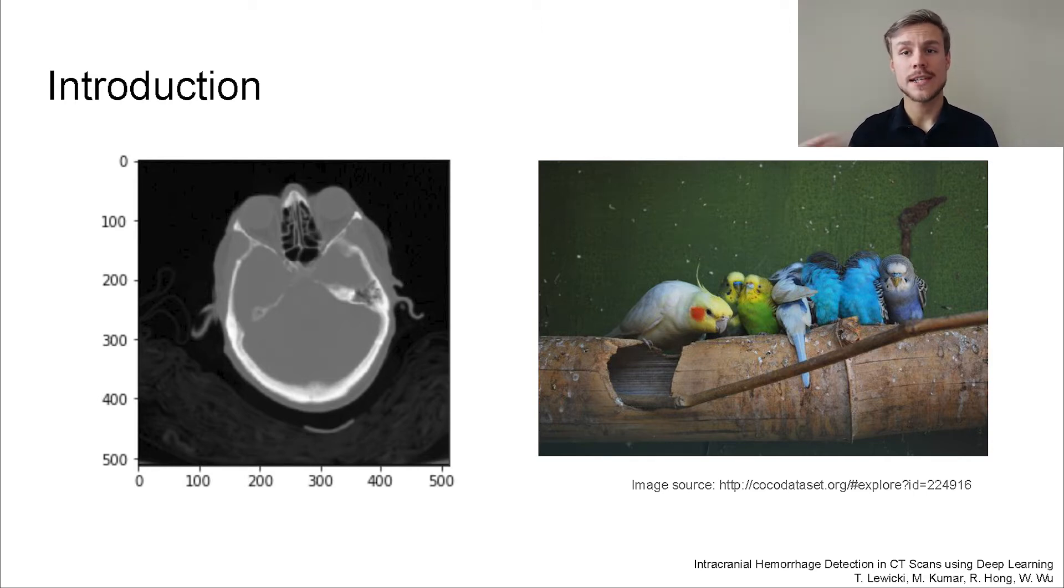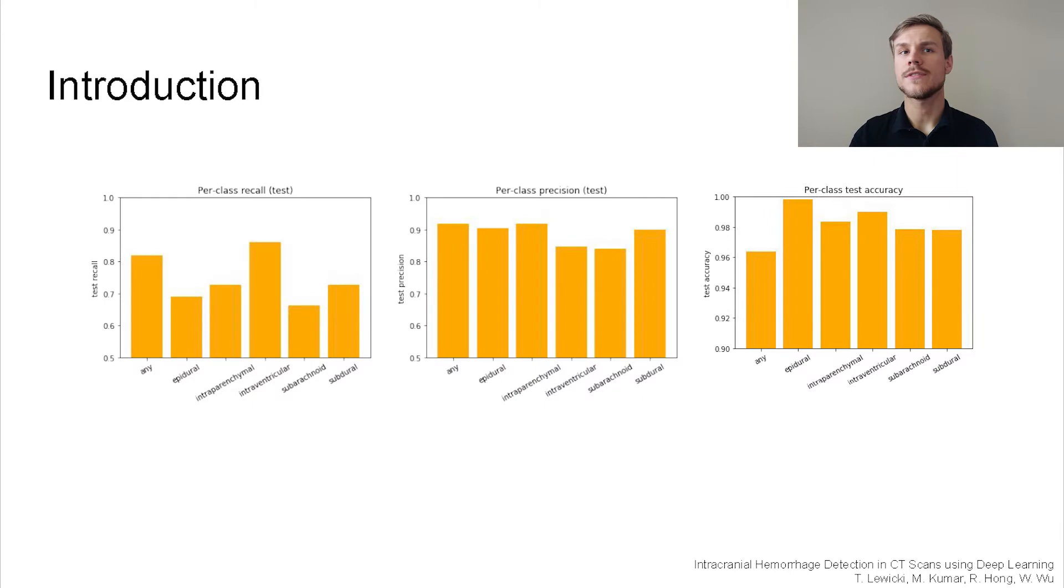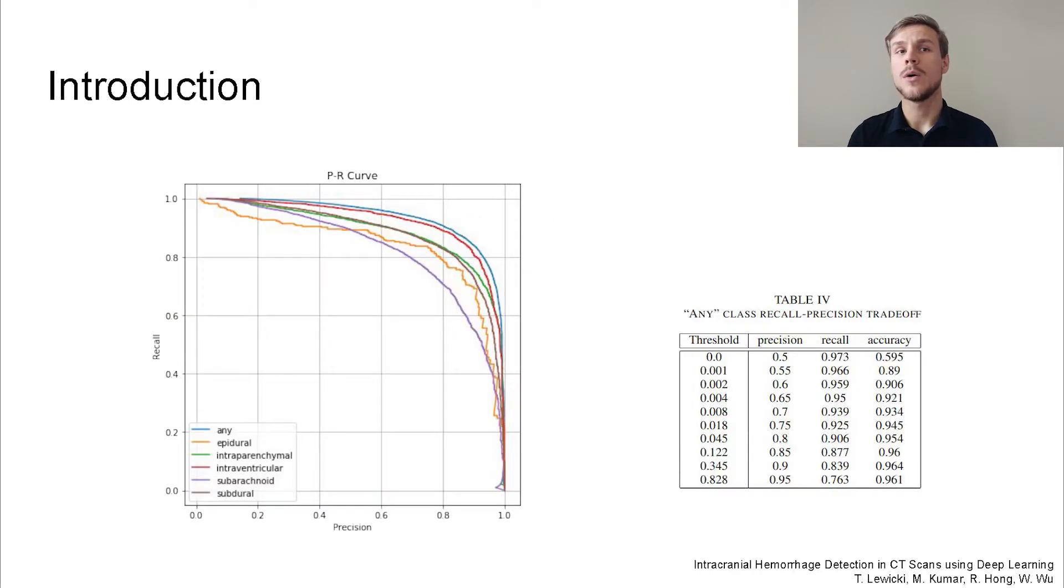We built a convolutional neural network model based on a ResNet for hemorrhage classification. Our model achieved an accuracy of 93.3% in making the correct multiclass prediction and an average per-class recall score of 76%. We show that it is possible to achieve an average recall of 86% while maintaining 70% precision via tuning the prediction thresholds.